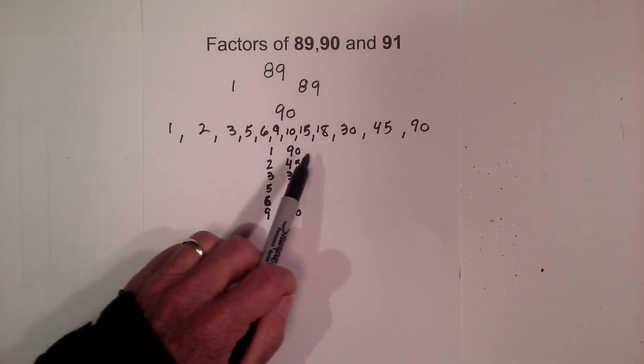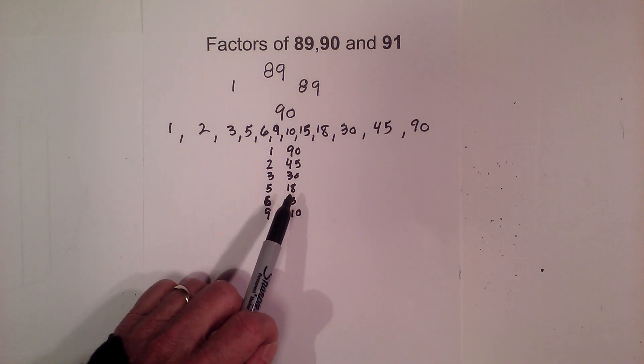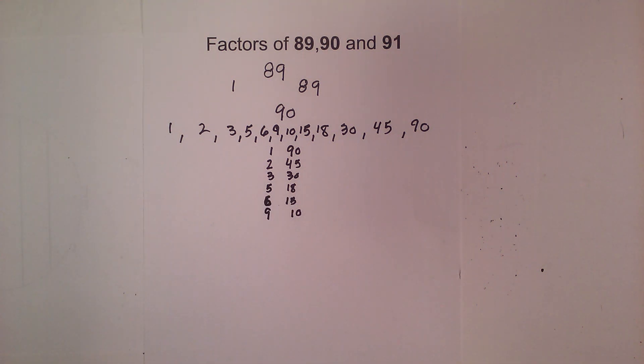1 times 90, 2 times 45, 3 times 30, 5 times 18, 6 times 15, 9 times 10. There are the factors of 90.